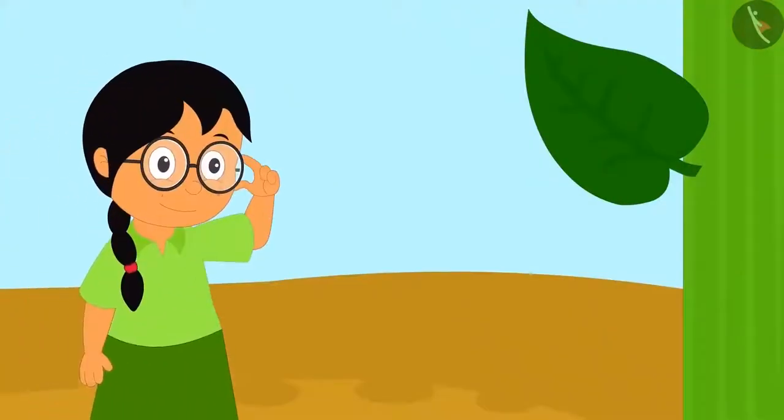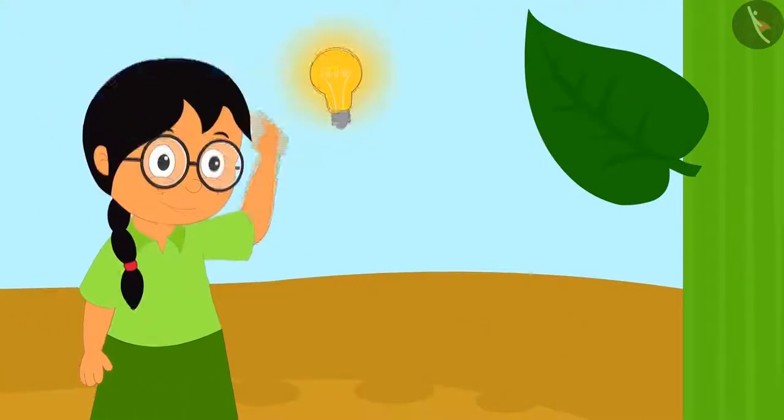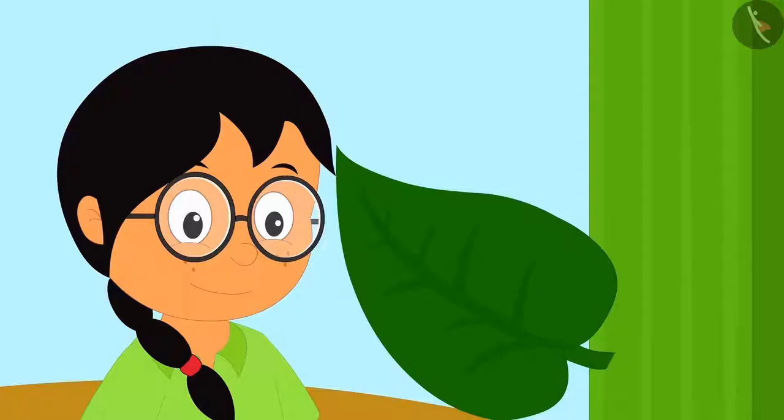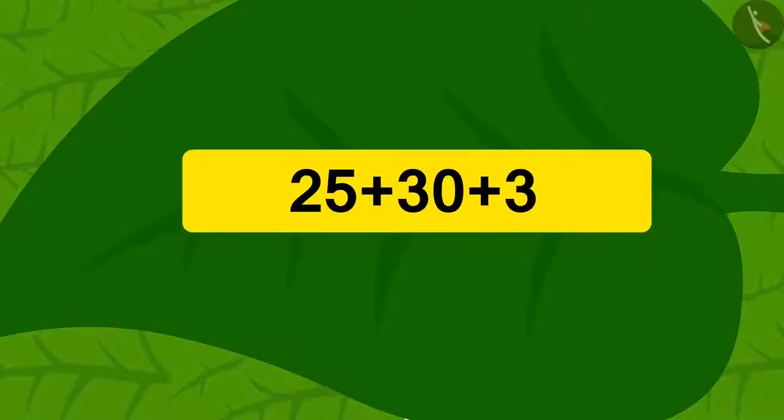Then Meenu got an idea. She saw a puzzle written on the leaf of the vine. This was the puzzle written on the leaf. Children, can you find the answer to this puzzle mentally? Yes! Using the method of addition we have learned, we can solve this quickly.